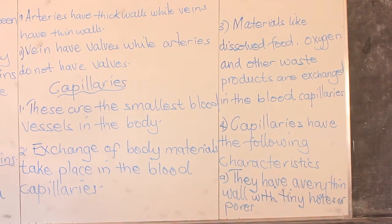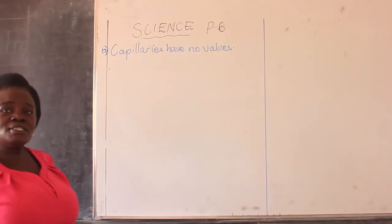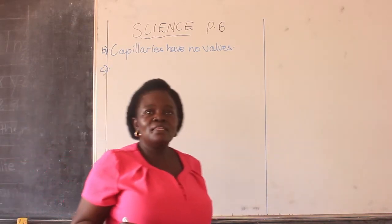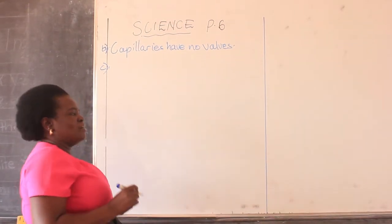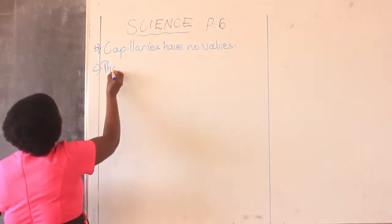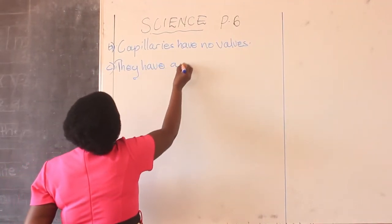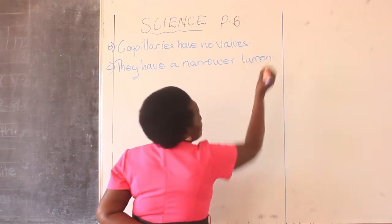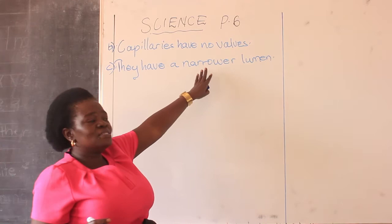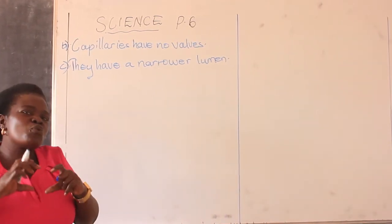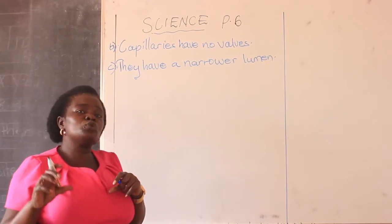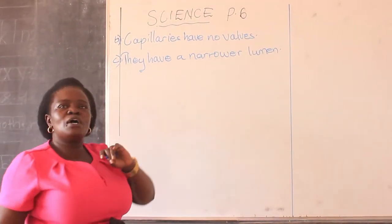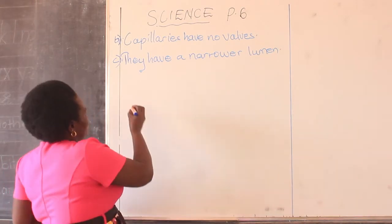Another characteristic: capillaries have no valves. Then another characteristic says they have a narrow lumen. Lumen is a scientific word meaning blood passage — so their blood passage is narrow, or more precisely, narrower than arteries. So it is different from the narrow lumen that arteries have.